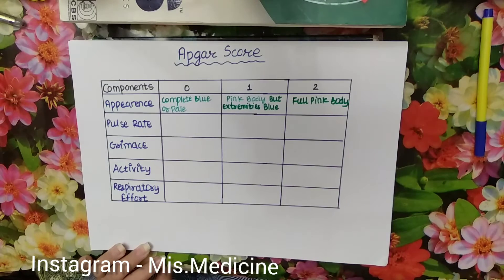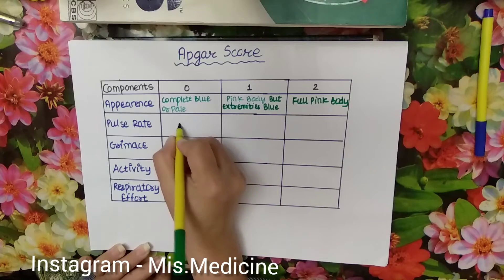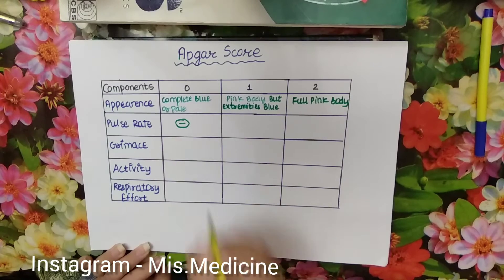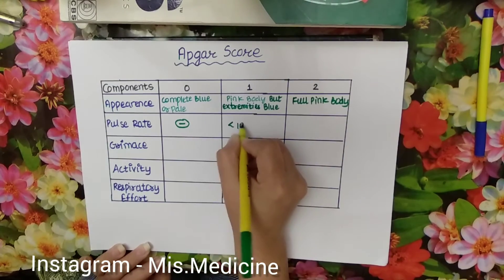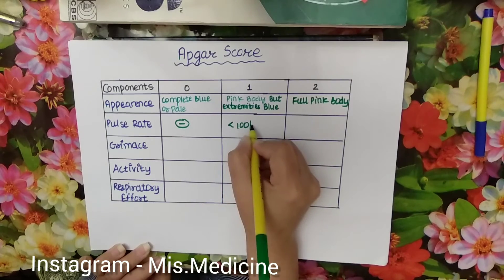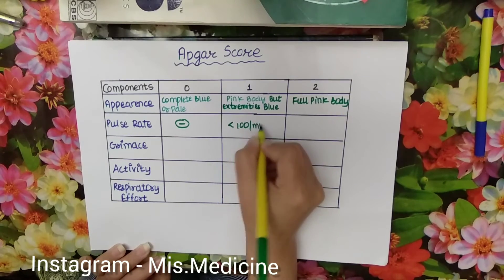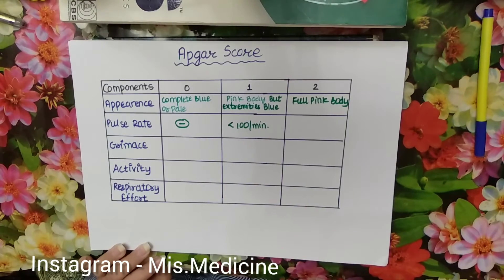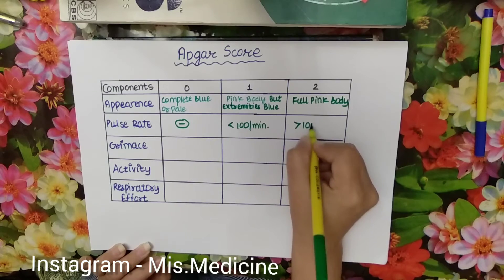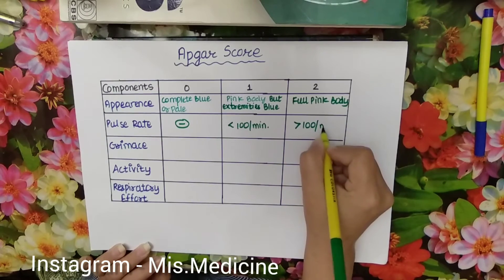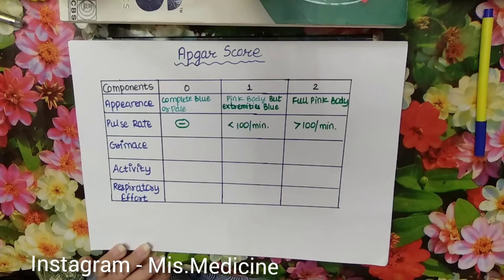Next is pulse rate. If pulse rate is absent, the score is 0. If pulse rate is less than 100 per minute, the score is 1. If the pulse rate is more than 100 per minute, the score is 2.